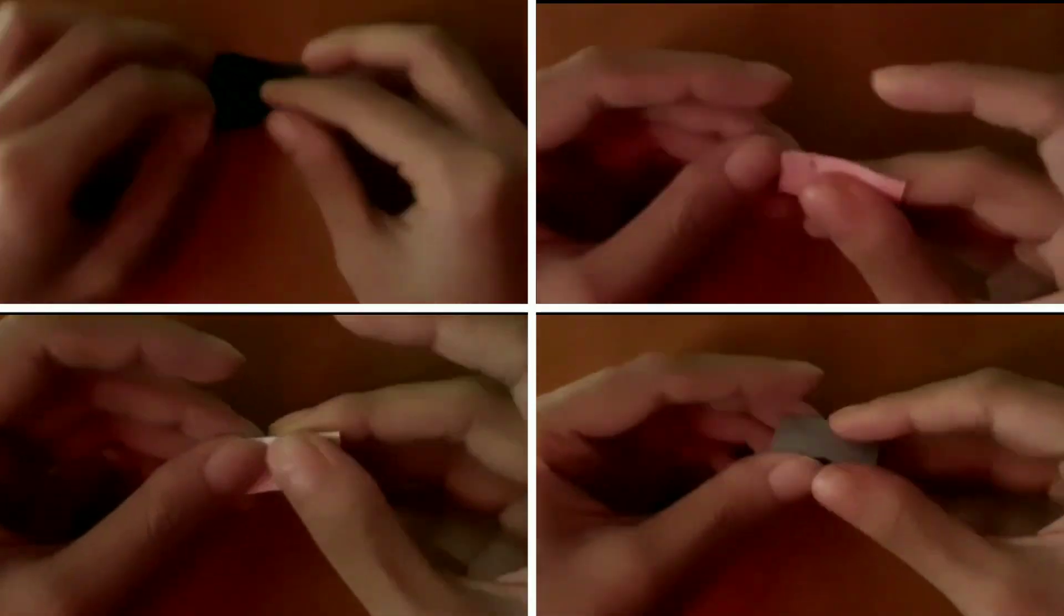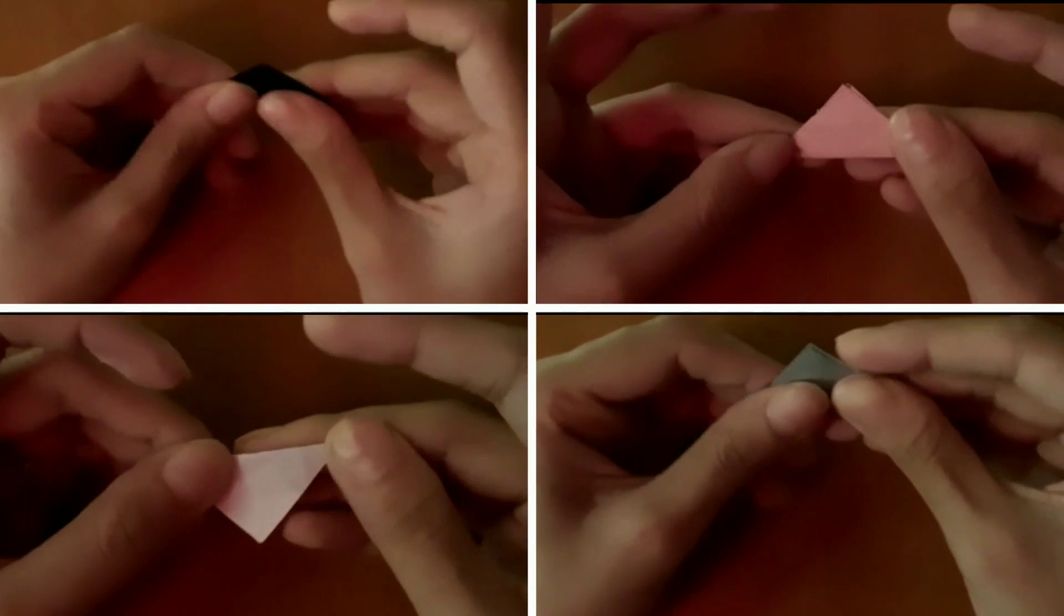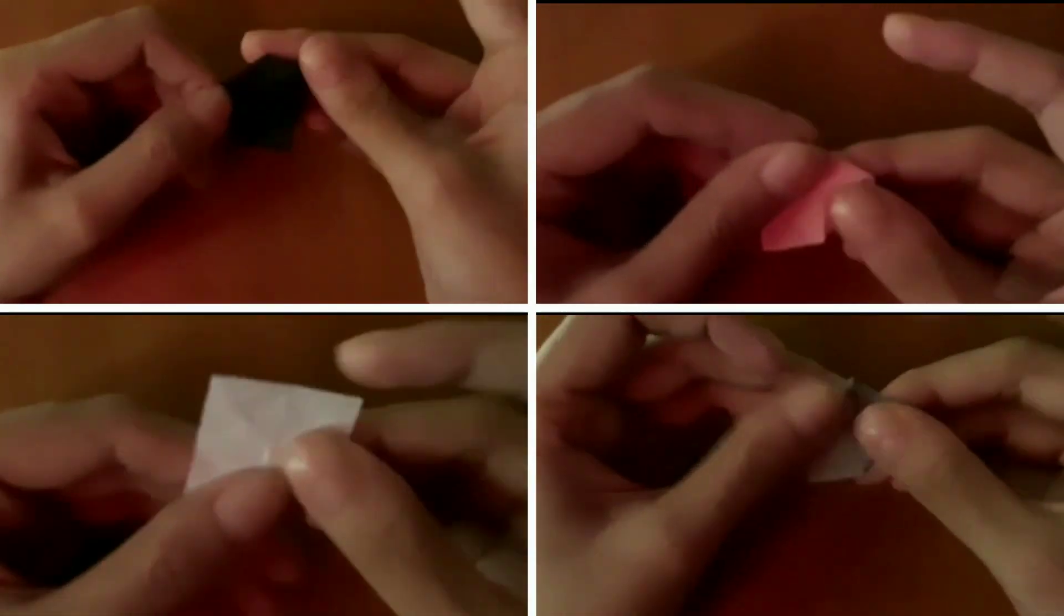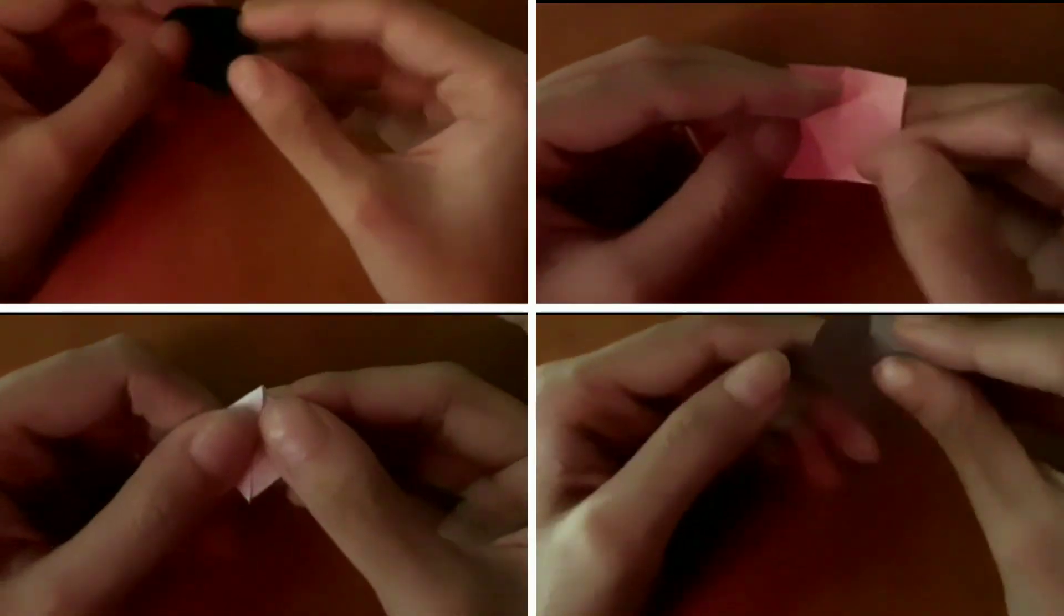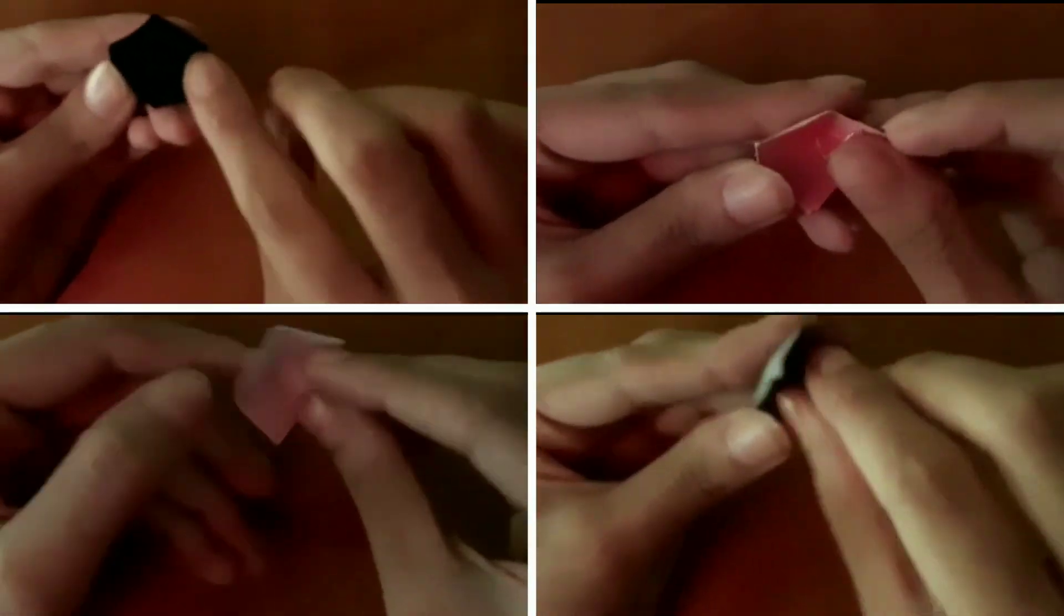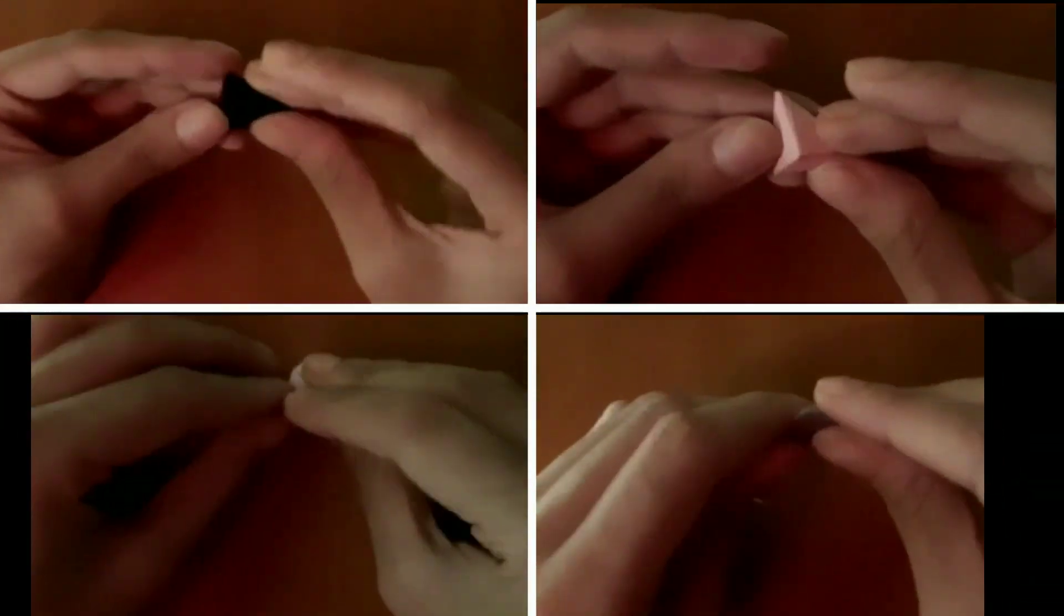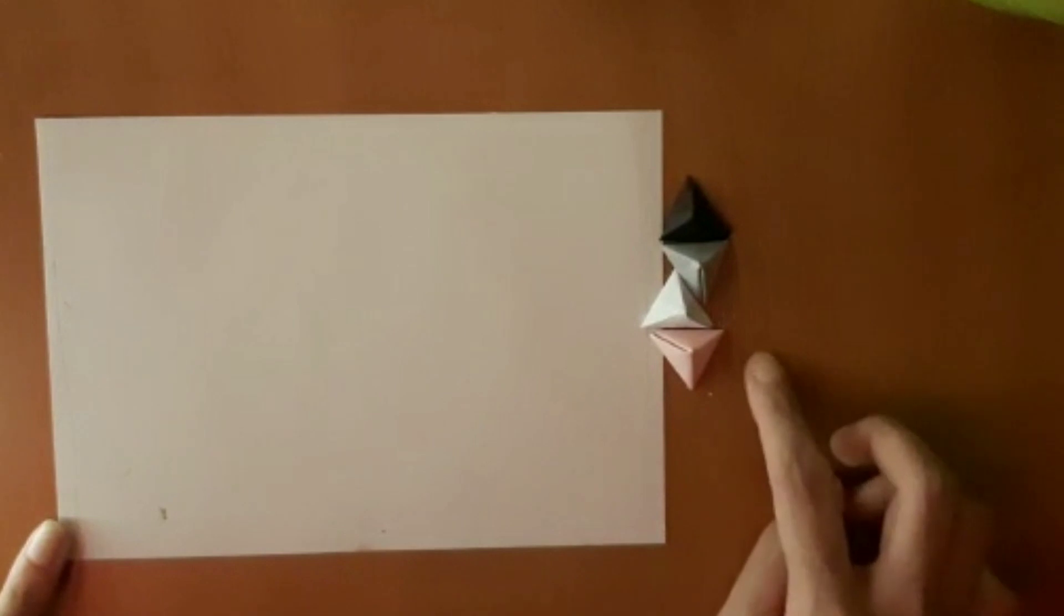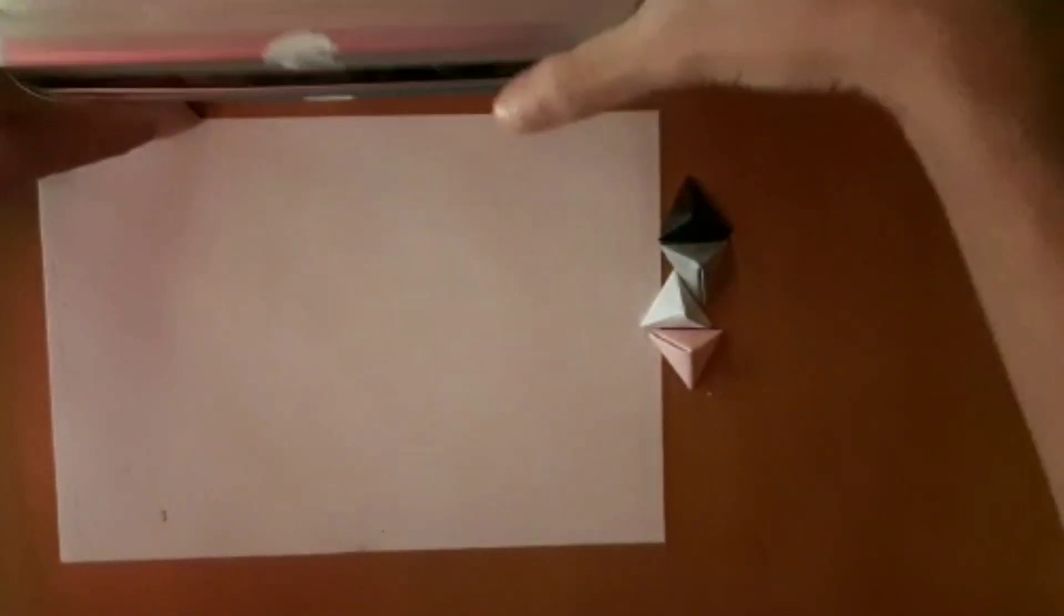We have used four different colors here. You can go with any color of your choice. We've chosen black, gray, white, and pink as a pattern and we've already made some triangles beforehand.